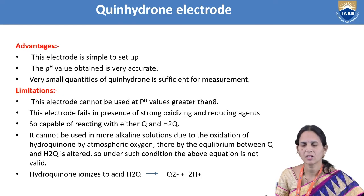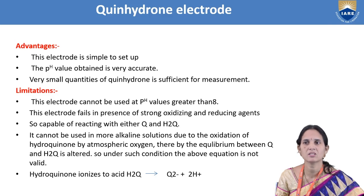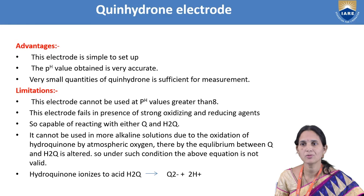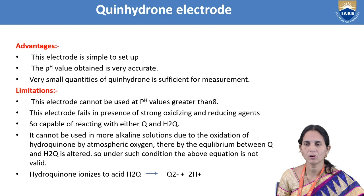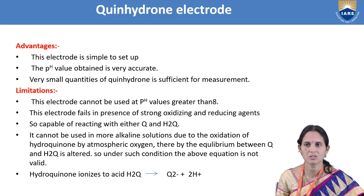Advantages of the quinhydrone electrode: it is very simple to set up and construct; the pH values obtained are very accurate; and only very small quantities of quinhydrone are sufficient for measurement. Limitations: this electrode cannot be used at pH values greater than 8 — accurate values are only obtained below pH 8.